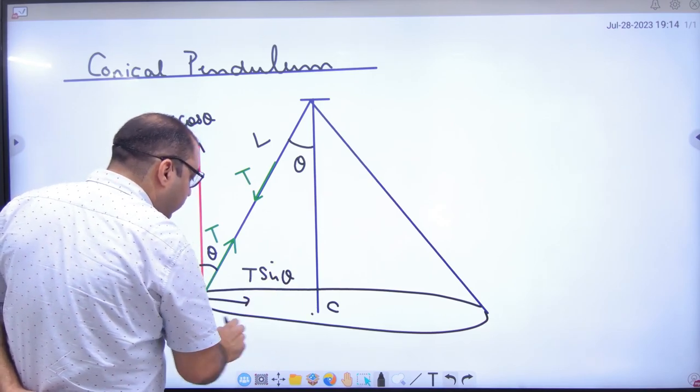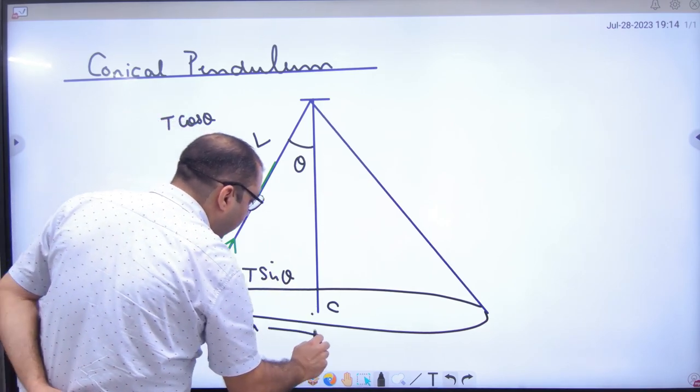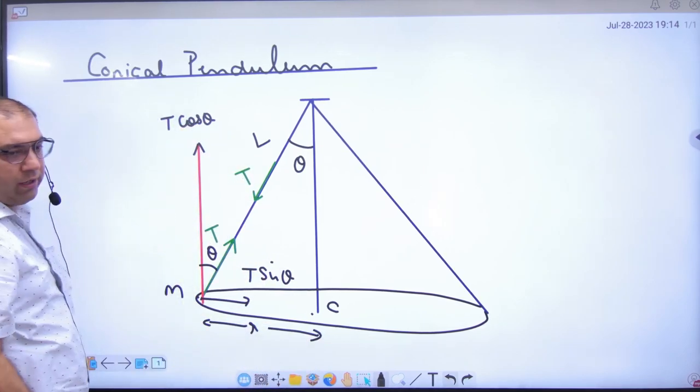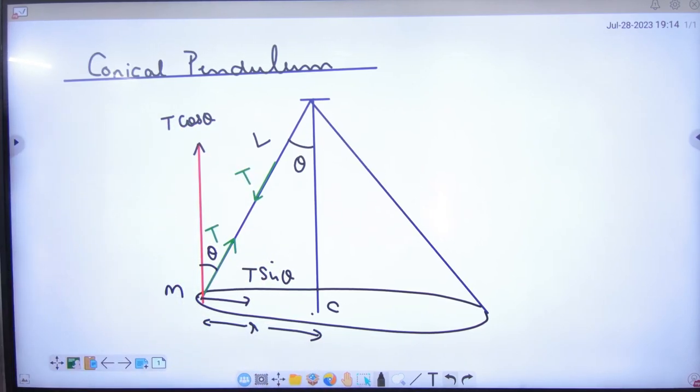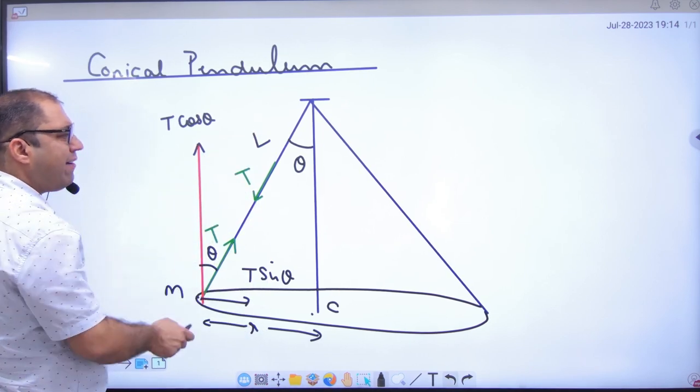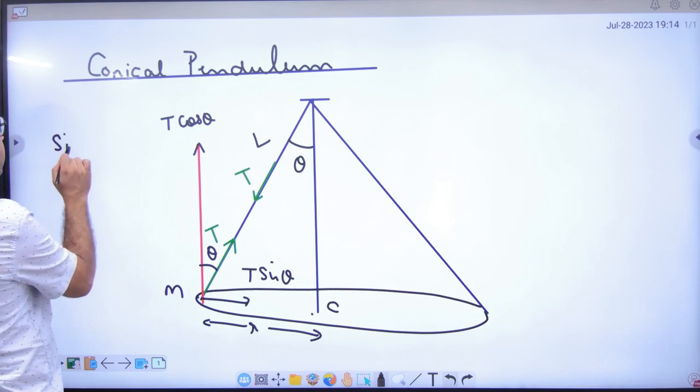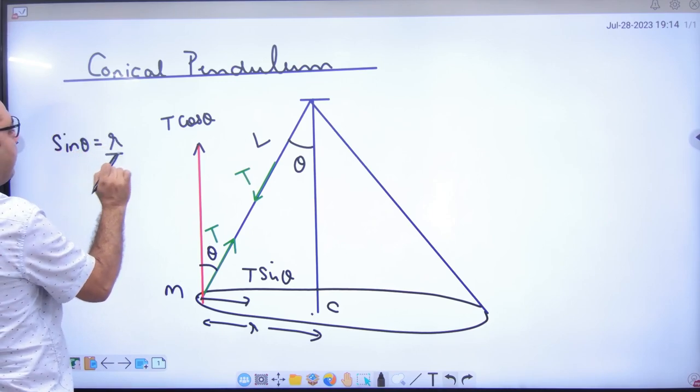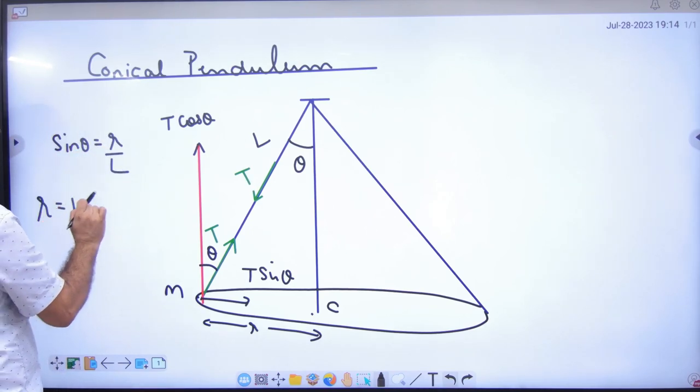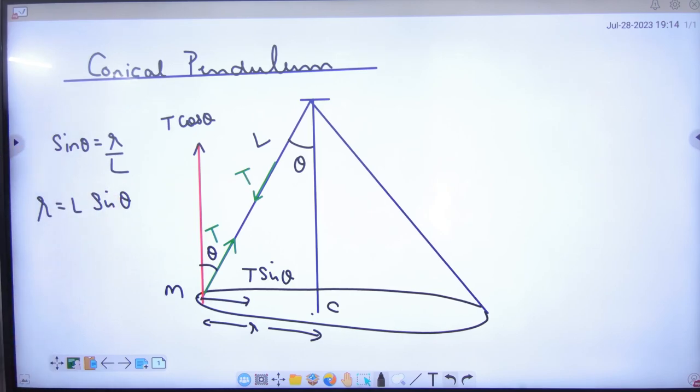This stone is in small r radius. Small r radius is not given in paper, L is given. Theta is given. So you will do sin theta - small r by L equals sin theta. So small r value will be L sin theta.